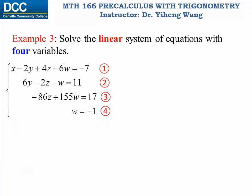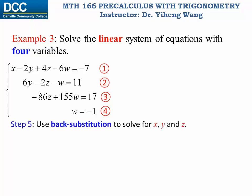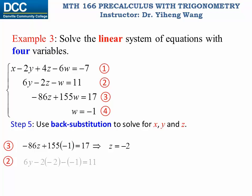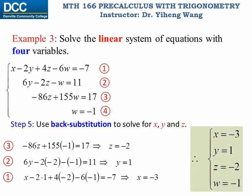Even though this system is not in strict row echelon form because not all leading coefficients are one, it is close enough, and the most important thing is that each equation is missing one additional variable compared to the previous one. We can now solve for all four variables using back substitution. We substitute w equals negative one into equation three to solve for z, then substitute both w and z into equation two to solve for y, and finally substitute y, z, and w into equation one to solve for x.